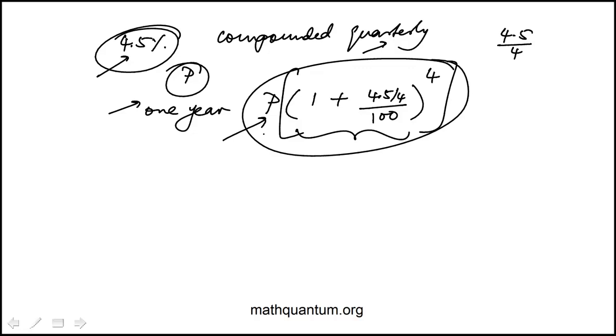So 4.5 divided by 400, which is that piece here, plus 1. So the inside is 1.0125, I have to raise this to the power of fourth, which is 1.045765.